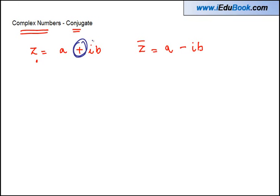So basically this sign of plus becomes minus in case of conjugate. For example, if Z1 is equal to 3 plus 4i, the conjugate of Z1 will be given by 3 minus 4i.